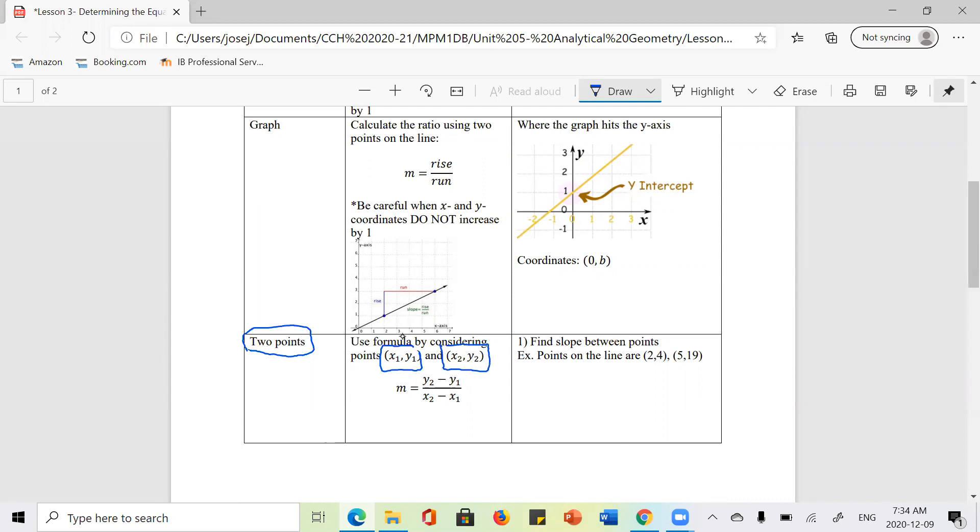And then we talked about this already, that you want to be consistent with this. You could take the first y-coordinate minus the second y-coordinate, but if I decide to do that, then I have to be consistent and take the first x-coordinate and subtract off the second x-coordinate.